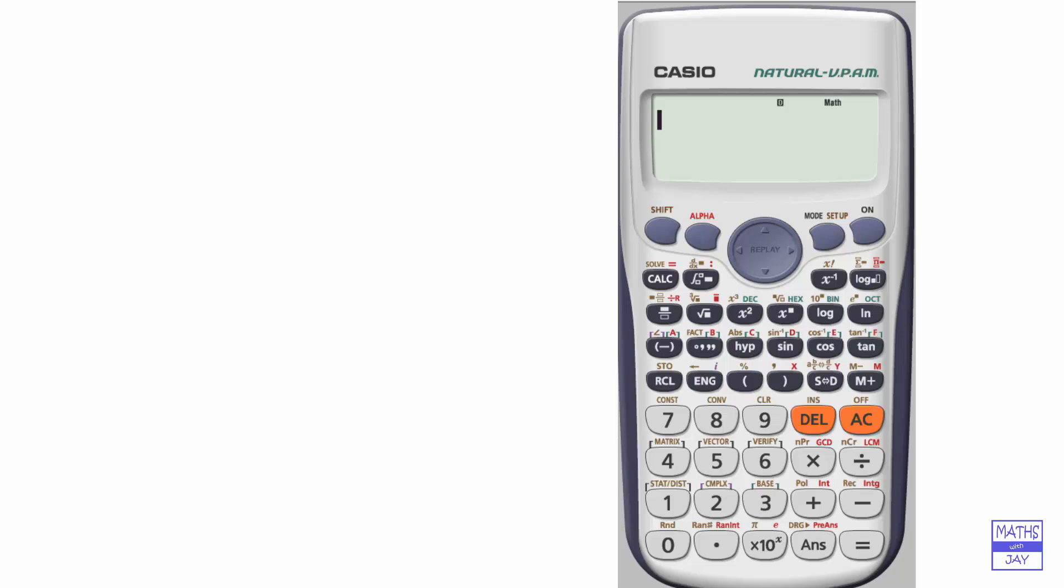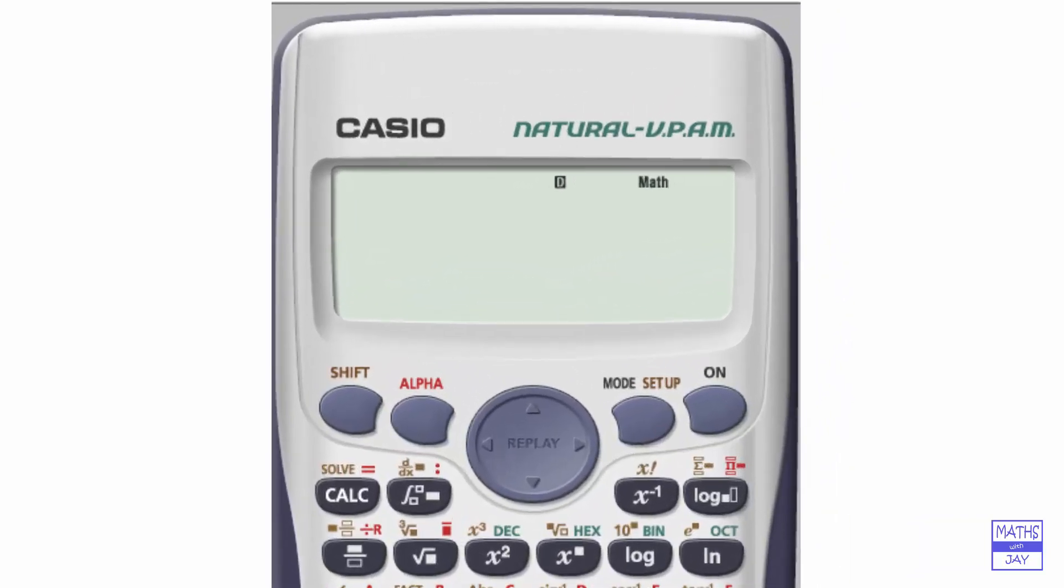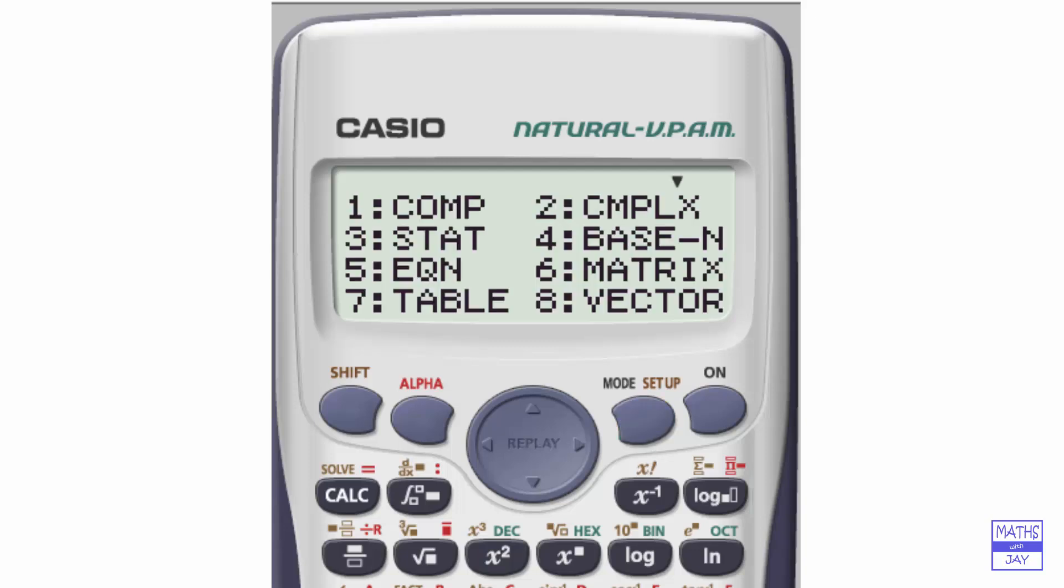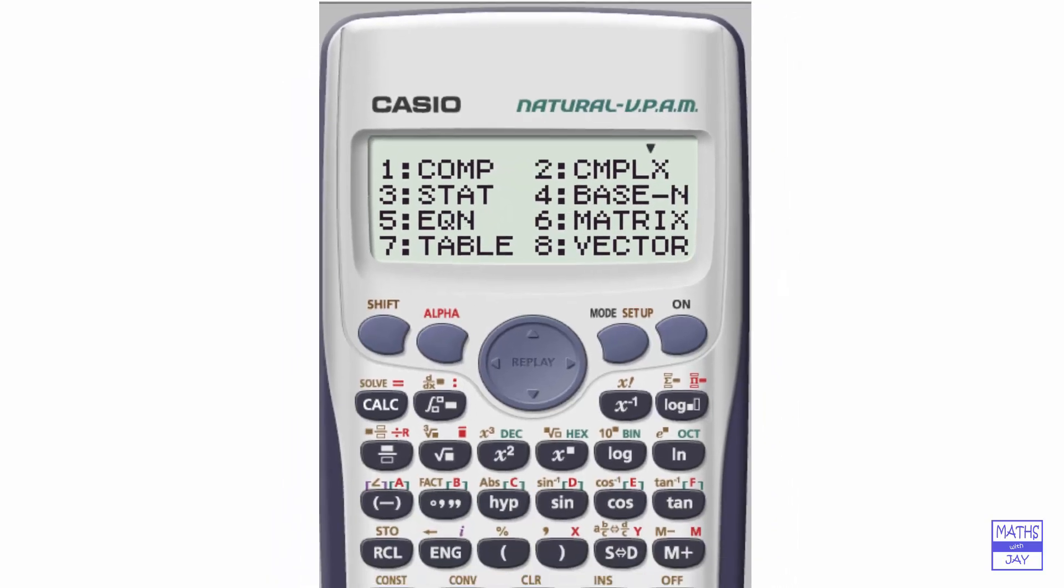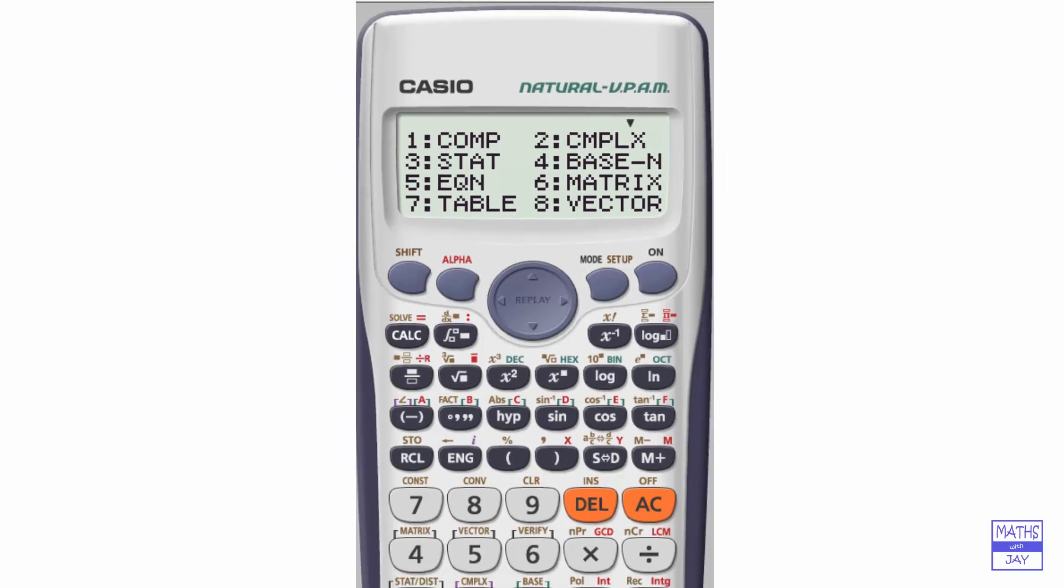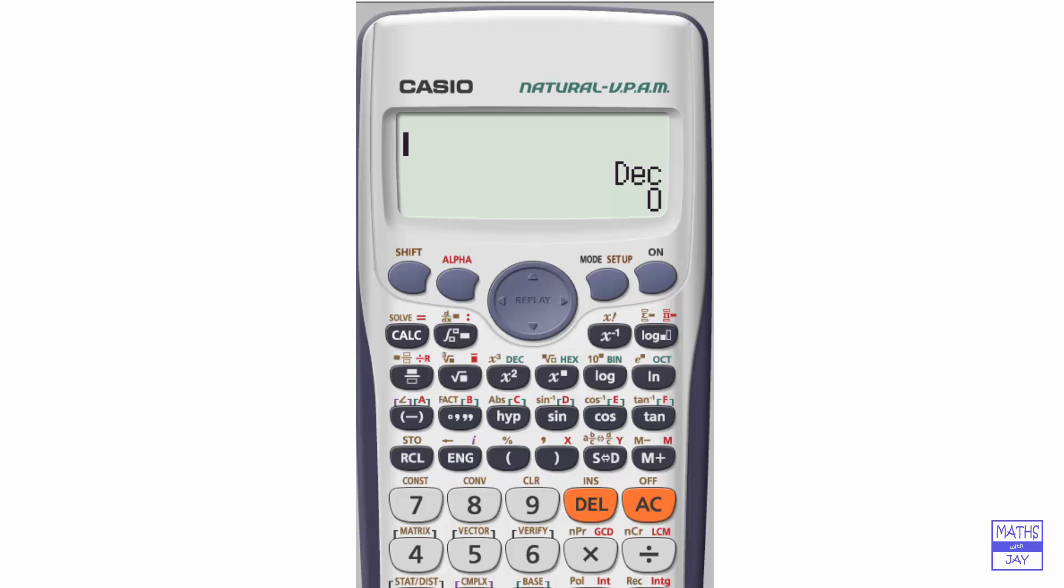So the first thing to do is to put the calculator in the relevant mode, so we want the mode button, and we can see that the key that we want is 4 because we want base n, we're changing the base of our number, so let's put in 4, and the dec there is telling us that we're in decimal at the moment.